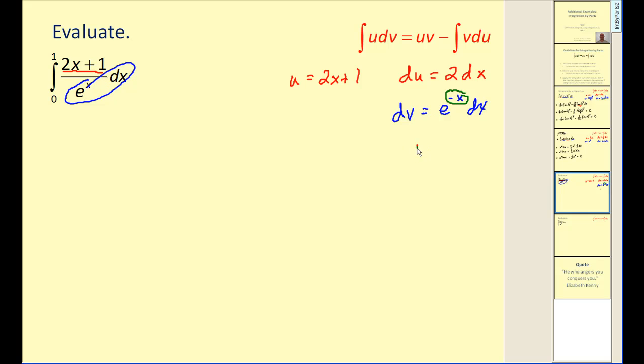So to integrate this, we would have a u of negative x and a du of negative dx or negative du is equal to dx. So when we integrate both sides of this equation, we're going to have v equal to negative e to the power of negative x. So what we did here is we performed substitution in order to integrate both sides. So when we apply our integration by parts formula, we'll have our u times v minus the integral of v du.